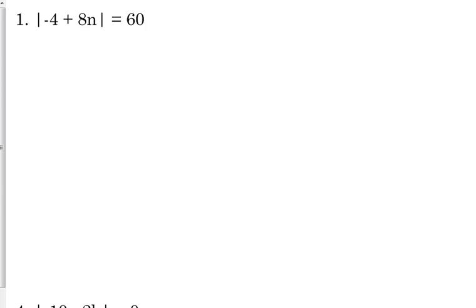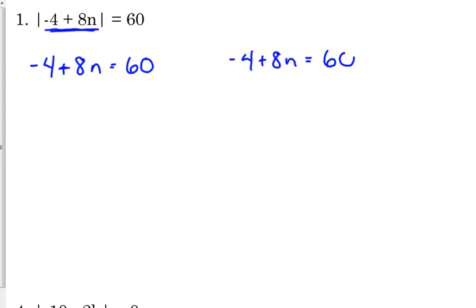Absolute value equations have two solutions, and here's the reason why. If negative four plus eight n is equal to positive 60, then the absolute value of positive 60 is positive 60. But if negative four plus eight n were equal to negative 60 — if whatever n was there caused that expression to be negative 60 — then the absolute value of negative 60 is still positive 60. That's why most of the time you have two solutions with absolute value equations. We are going to split this into two equations and drop the absolute value bars, setting it equal to positive 60 and negative 60, and solve each individually.